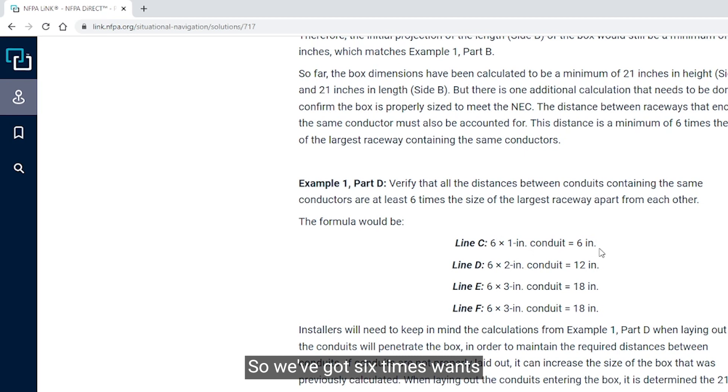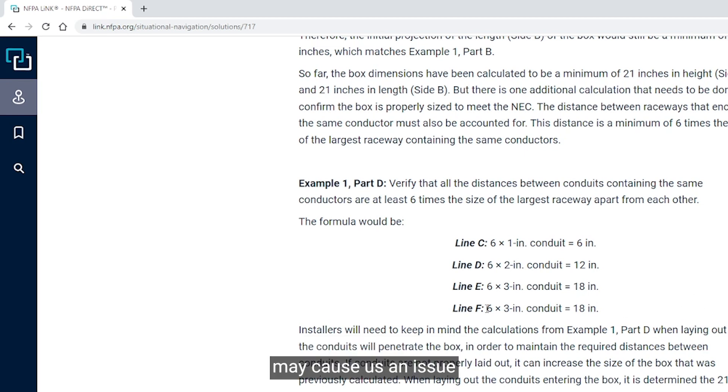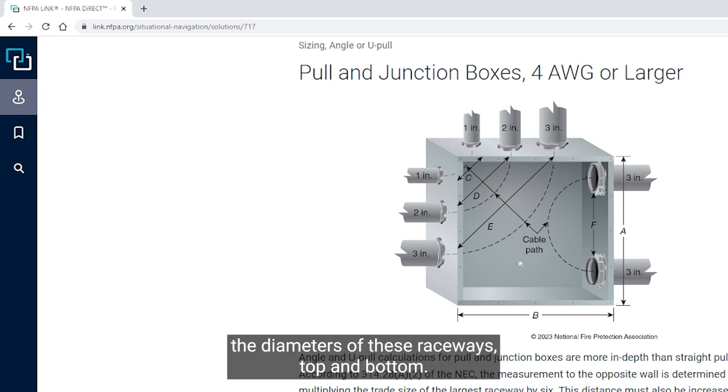So we're going to be looking at line C, line D, line E, and line F, and that is in Example 1, Part D. We're going to have to verify that these are separated far enough. Installers, you will need to keep in mind the calculations from this example when laying out how the conduits will penetrate into the box or enter the box to maintain the required distances between conduits. If conduits are not properly laid out, it can increase the size of the box that was previously calculated. When laying out conduits entering the box, we've got 6 times 1, so 6 inch, 12, and diagonally 18 inches.